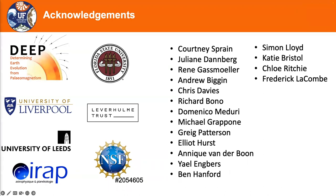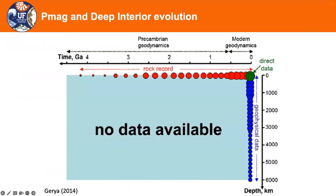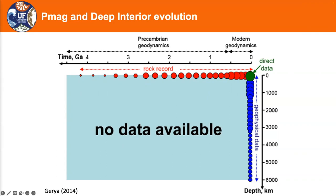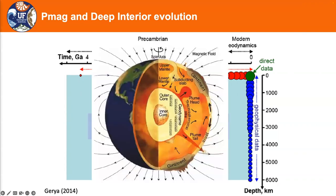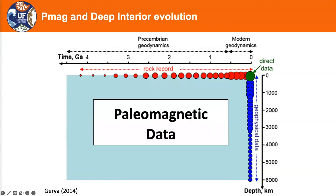We are trying to get the next step into studying the deep earth and how it evolved in the past. The problem we face when looking at deep earth evolution through time is that geophysical data showing us the interior of the planet is only a snapshot of the present-day state. If we want to go further back in time, we need something else as a proxy. Luckily, we have the magnetic field created in the outer core, and changes in the earth's interior would appear as variations of the magnetic field at the surface, preserved in rocks — that's paleomagnetic data.